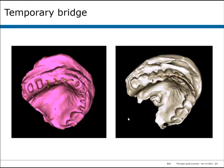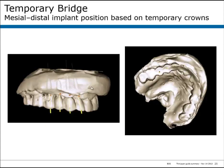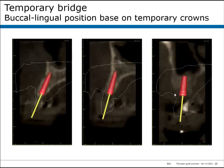The next case involves using a temporary bridge to discern future tooth position. This case was planned with two alginates — one of the patient without their prosthesis and one with the temporary bridge in place. In the software, the model was made translucent and the implants were each placed down the center of the tooth, adjusted buccal-lingually to be in optimal position at central fossa and incisal edges. In the cross-sectional views, the surgical envelope and the prosthetic envelope are visible in the same image, making it simple to place the implant in the ideal position. The bone cooperated and implants were placed within the surgical envelope in ideal prosthetic positions for the lateral, cuspid, and bicuspid.